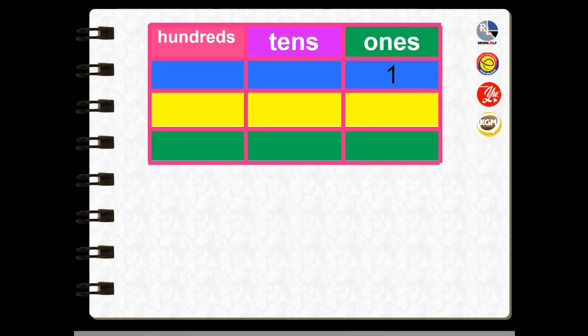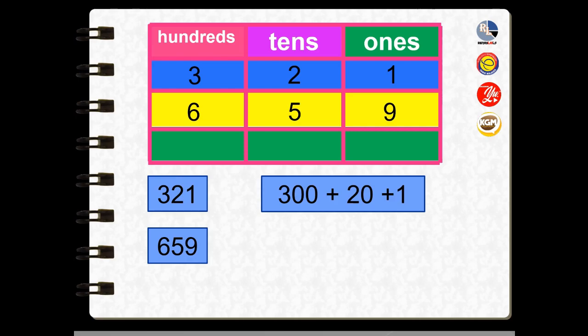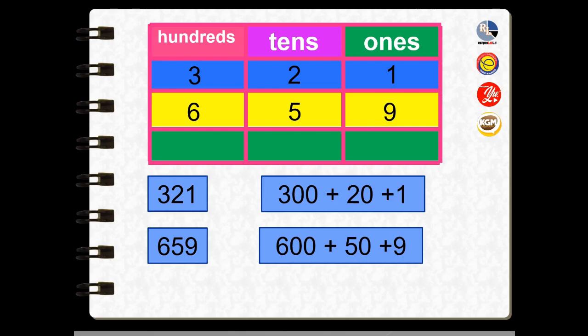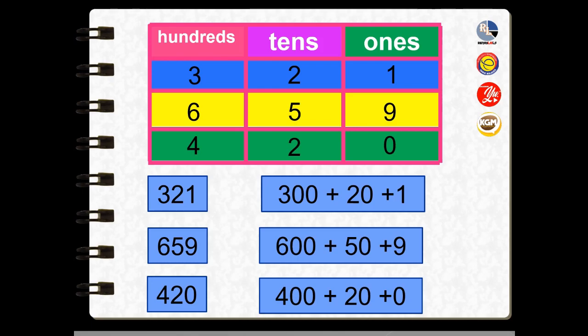Let's look at this table — we have three numbers. Three hundred and twenty-one: in extended notation using digit value, we write it as 300 plus 20 plus 1. Another number, 659: the extended notation in digit value is 600 plus 50 plus 9. And 420 can be written as 400 plus 20 plus 0.